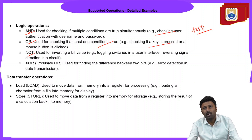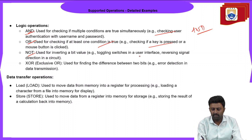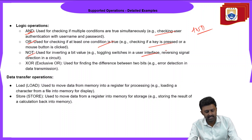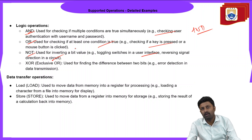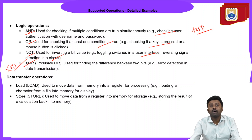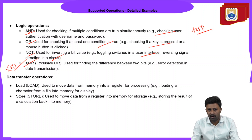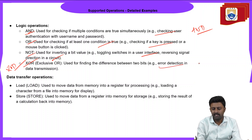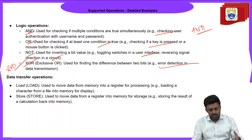The NOT operation is used for inverting bit values — examples include toggling switches in a user interface and reversing signal directions in a circuit. The XOR operation, written as XOR, is used for finding whether two bits are equal or not. XOR operations can be applied in error detection in data transmission.